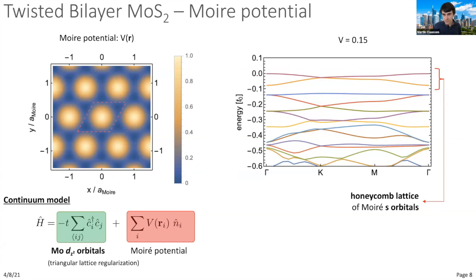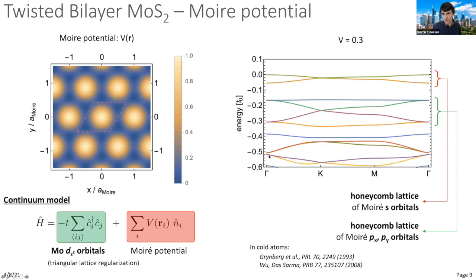Going to stronger moiré potentials, the next set of orbitals—two orbitals of px and py character—localizes at these honeycomb lattice potential minima. This constitutes essentially a px,py honeycomb lattice model, with orbital anisotropy being a function of the twist angle. And at even stronger moiré superlattice potentials, the next set of bands forms a Kagome lattice of s-type moiré orbitals at the shoulders of the potential.